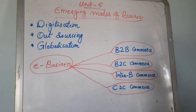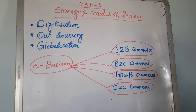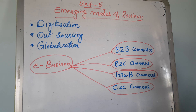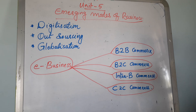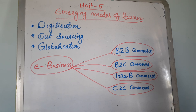Now the limitations of e-business: one is low personal touch; second, the need for technology capability and competence — you must know how to operate a mobile, laptop, or computer to order goods; third, increased risk due to anonymity and non-traceability of parties; fourth, people resistance; and finally, ethical fallouts. These are the drawbacks or limitations of e-business.